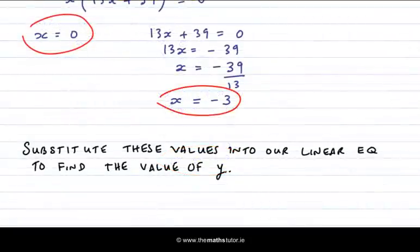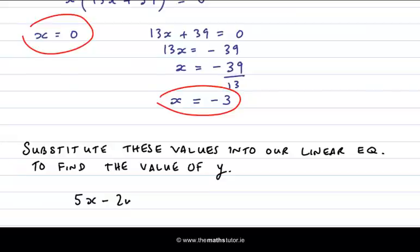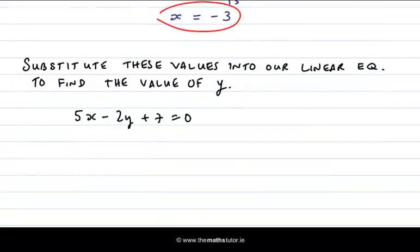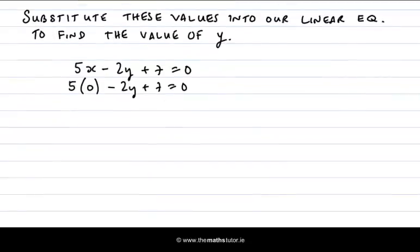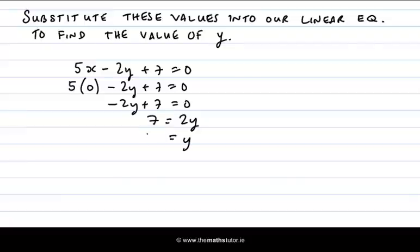Now we substitute these two values into our linear equation to find the value of y. Our linear equation was 5x minus 2y plus 7 equal to 0. So if we substitute our values in, we get 5 times 0 minus 2y plus 7. That is minus 2y plus 7 equal to 0. So 7 is equal to 2y and y is equal to 7 over 2.